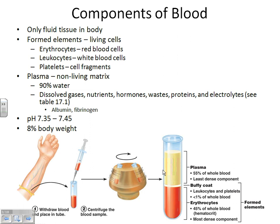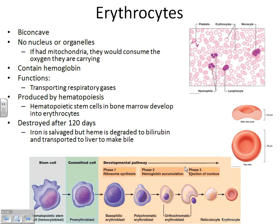The first formed element is the erythrocyte. I put this picture back on your slide — we looked at it back in Chapter 4. The little light pink circles are the erythrocytes, your red blood cells. They look darker on the outside and lighter on the inside because they have this shape called biconcave — it's thicker on the outside and then dips in on the inside.